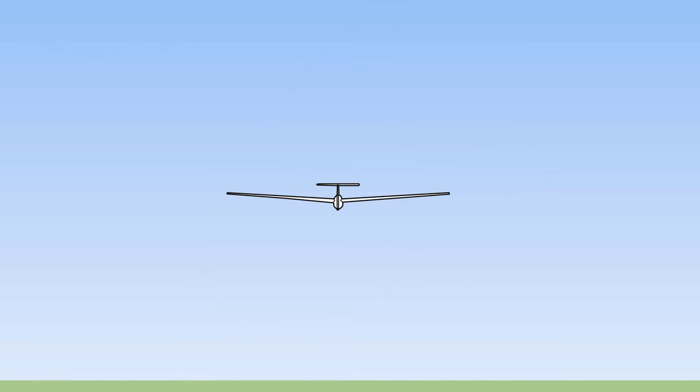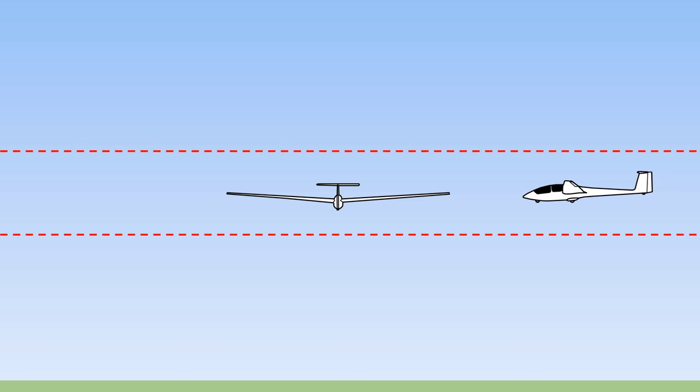While we do look above and below the glider, the focus of our lookout should be at the same level, as that is where the greatest risk of collision occurs. When the glider is banked, we must modify our lookout so that we are still looking out level with the horizon.